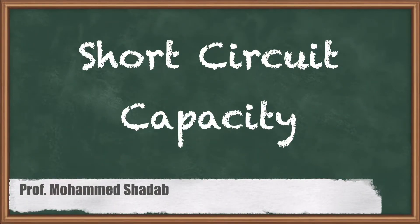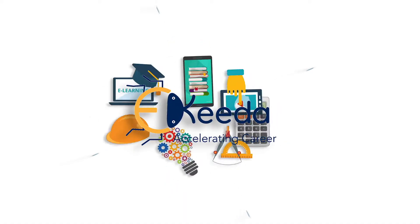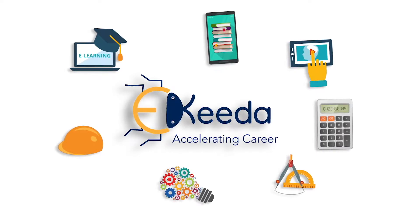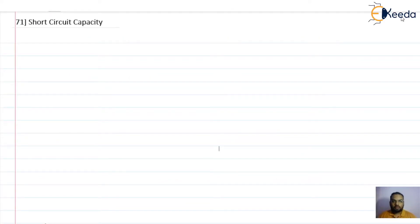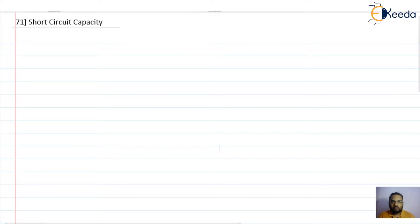Hello friends. In this video lecture we are going to discuss how the short circuit capacity can be used to analyze voltage stability. In our previous lecture we discussed various things related to voltage stability, the different types of voltage stability, voltage instability, and voltage collapse. Now in this lecture we are going to discuss how the short circuit capacity can be used to analyze voltage stability.